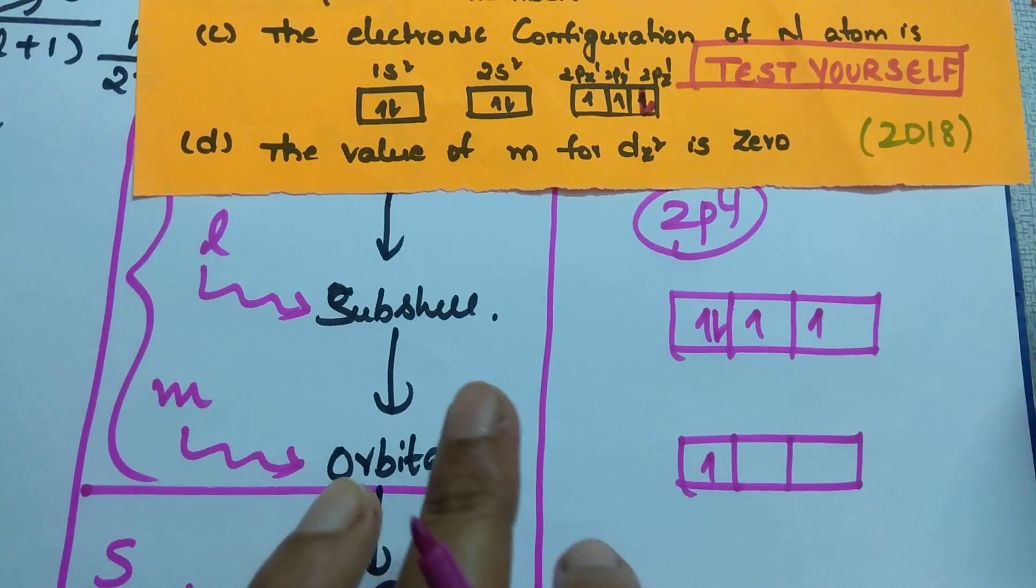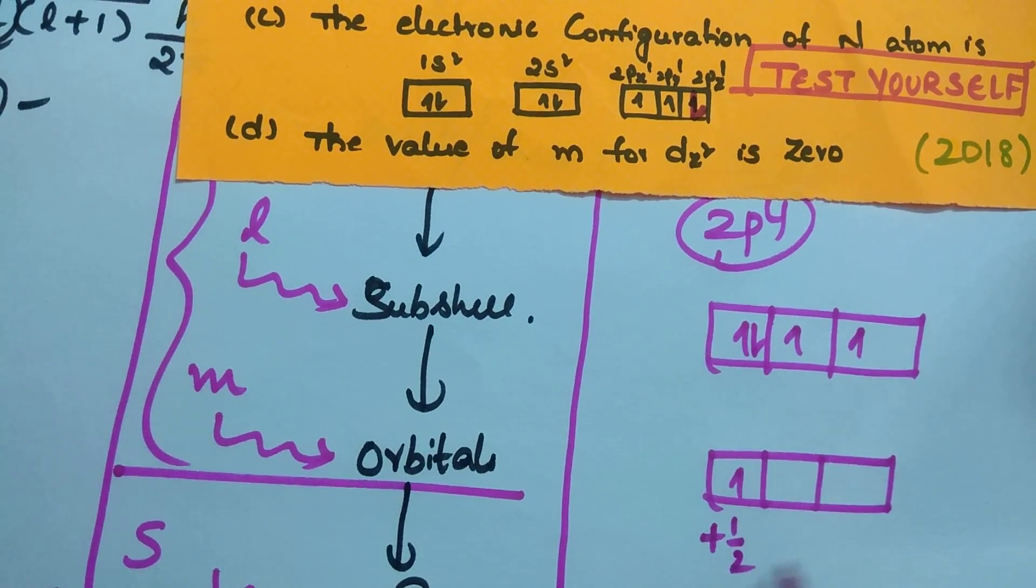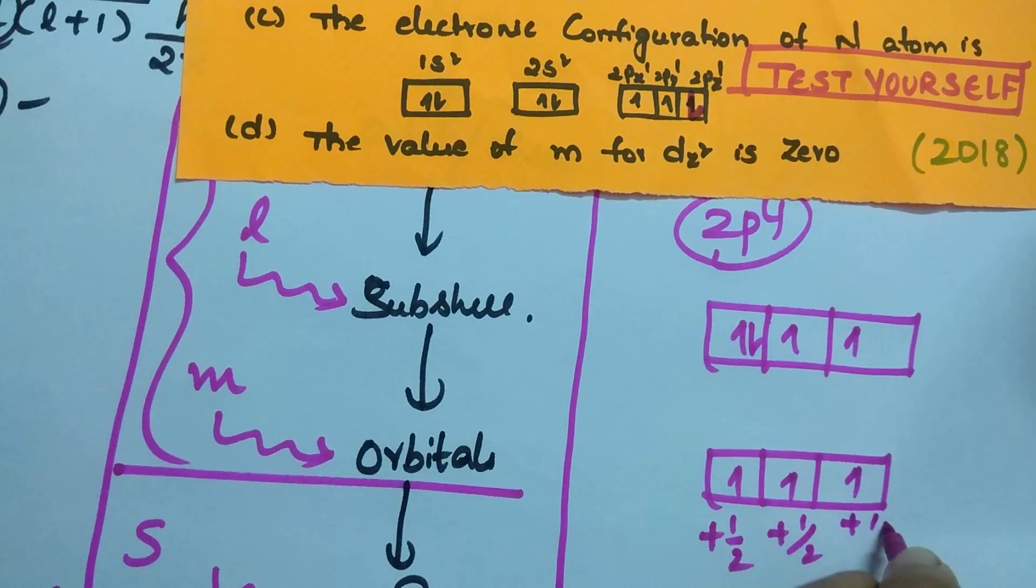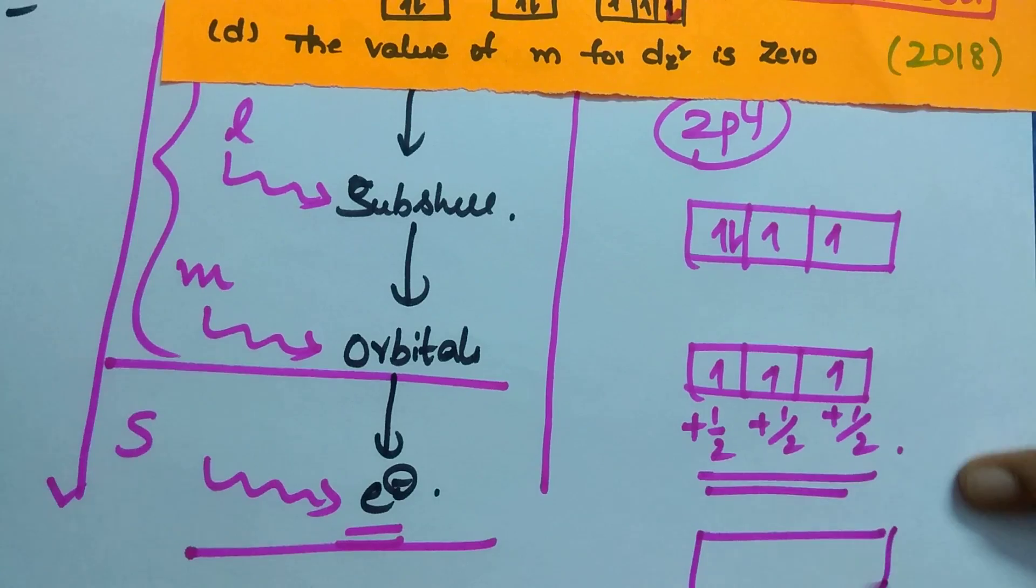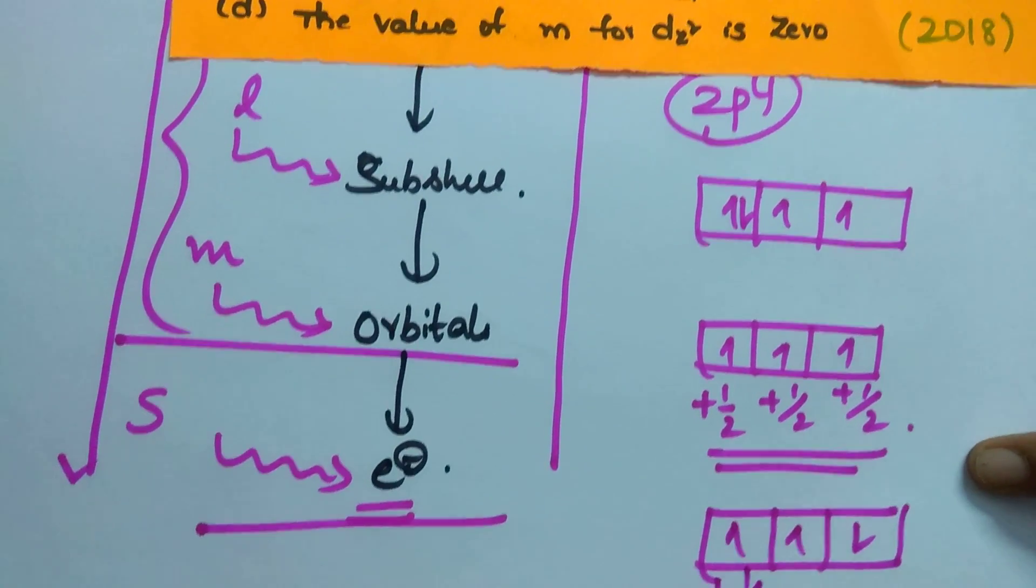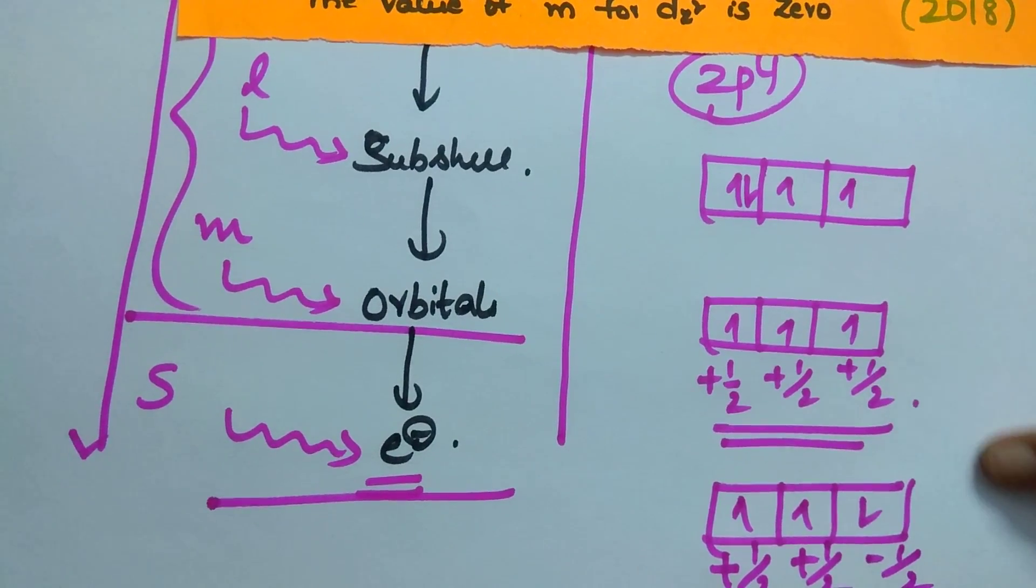You should follow the Hund's rule of maximum multiplicity. Multiplicity should be more. Here, for example, spin you consider as plus half. Next also plus half. Next also plus half. Then spin will be more. When, if electron is present, when compared to, if electron is present in this direction, then for example, for this spin plus half, for this plus half, this will be minus half. Then spin will be less.